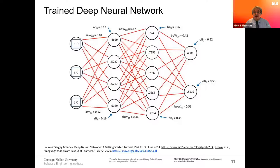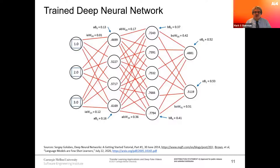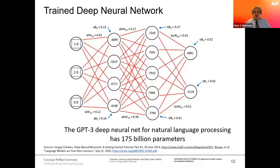You'll typically need hundreds to millions of example images of bananas, dogs, cats, or whatever you're classifying. In our modest example we have about 15 nodes and 50 edges. In real examples, the recently released GPT-3 deep neural network for natural language processing has 175 billion parameters. Imagine how many updates must happen for every new training sample. Building these things from scratch takes a lot of time and computation power, so people look for shortcuts — and that's what transfer learning is.